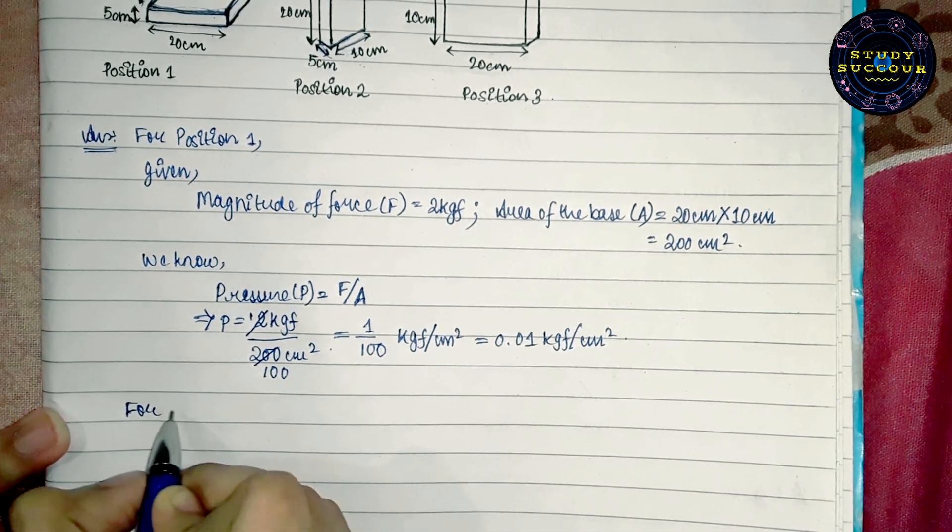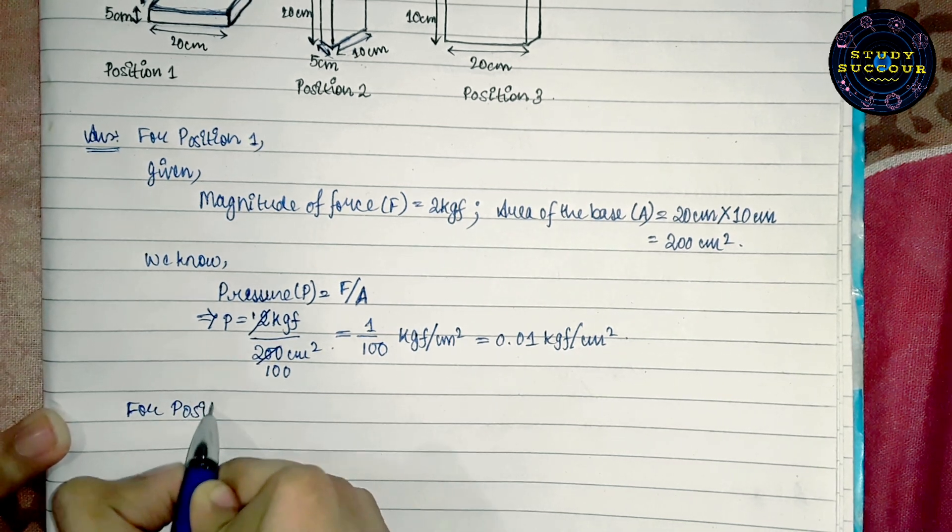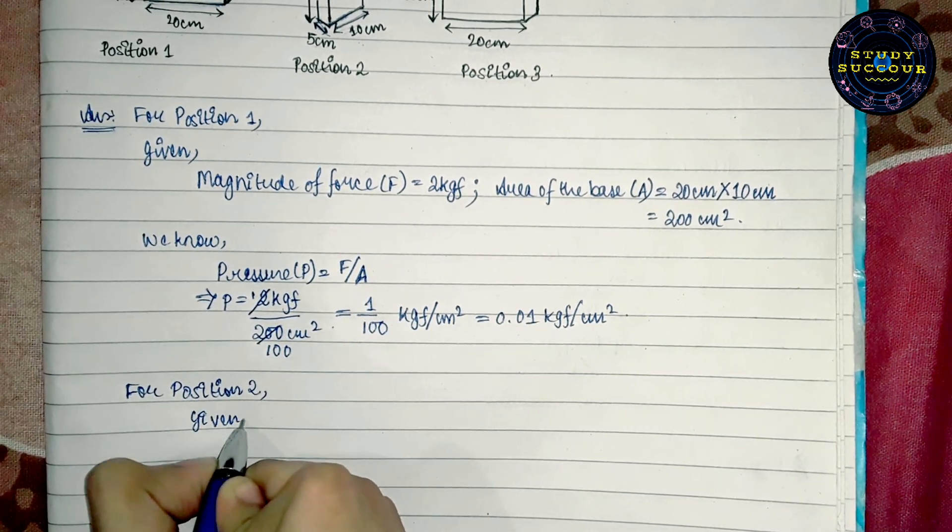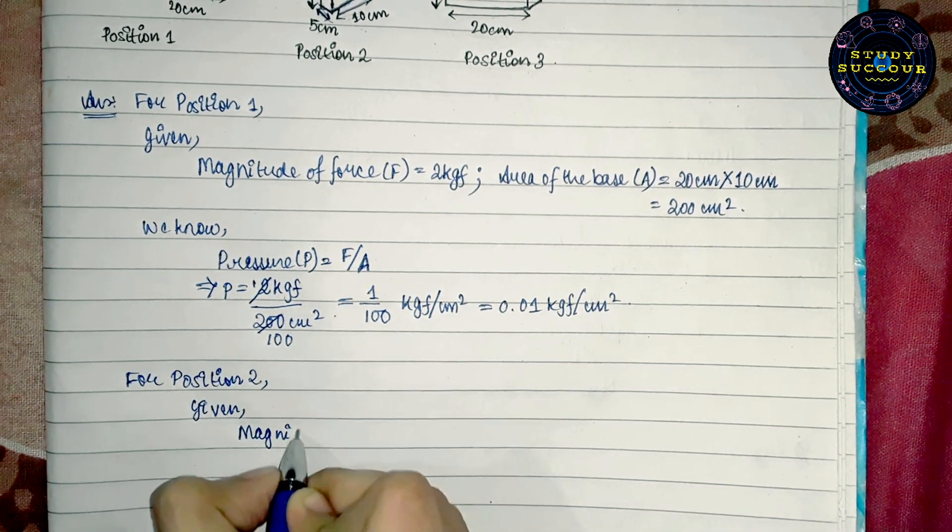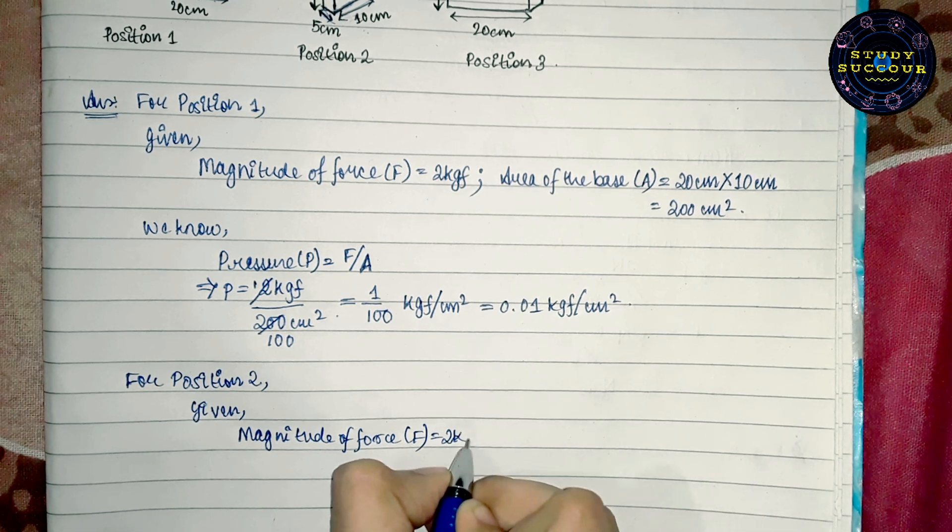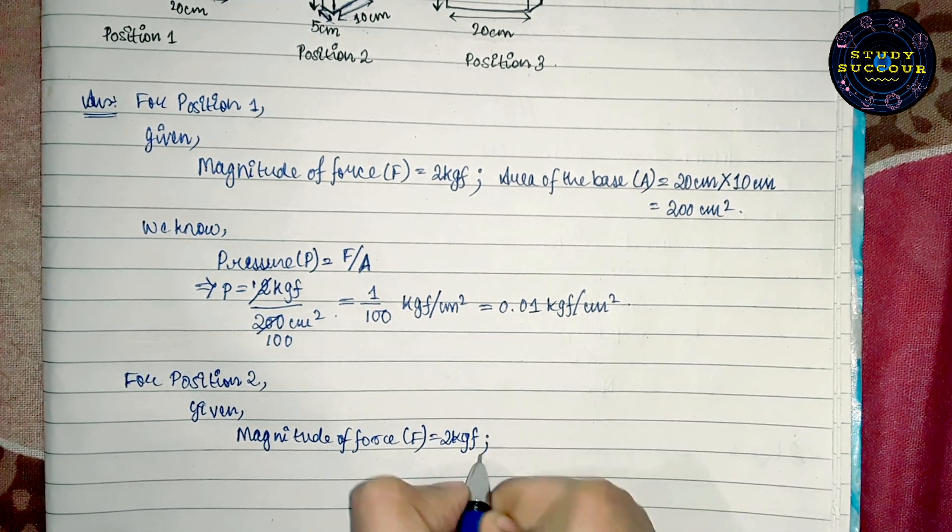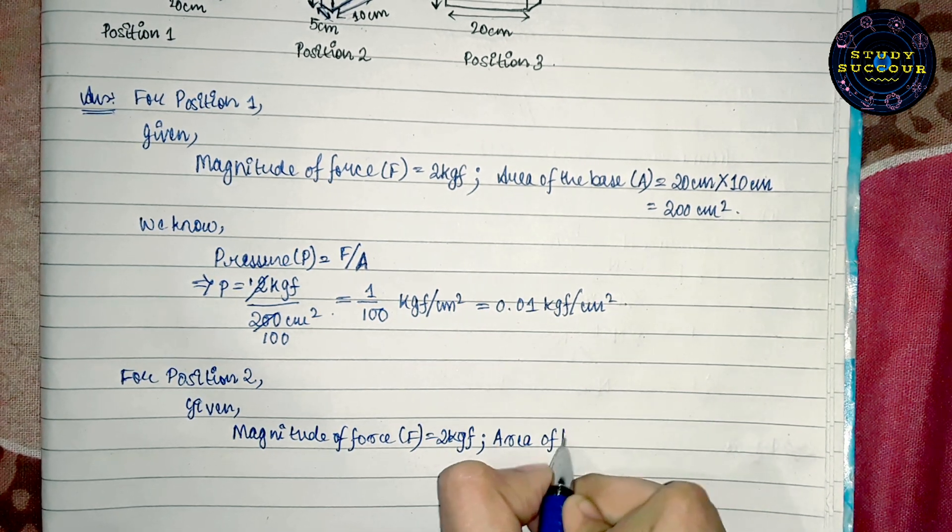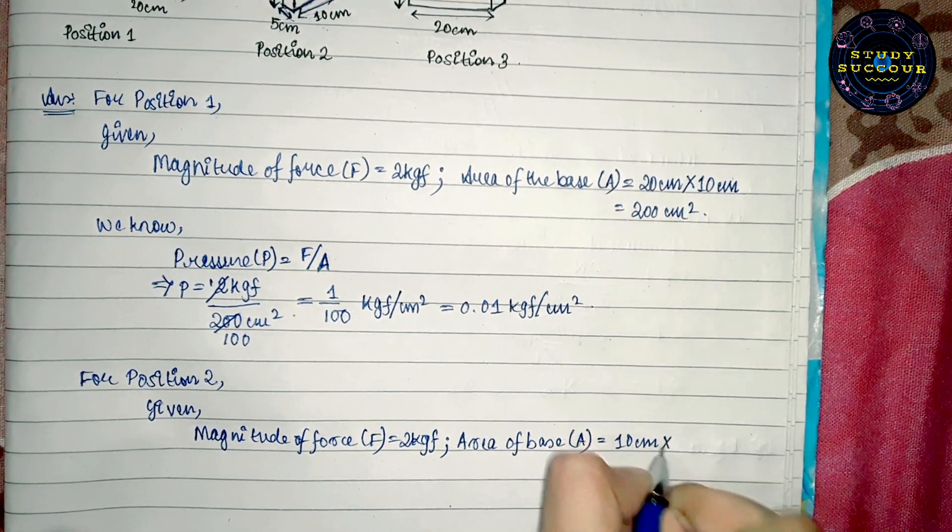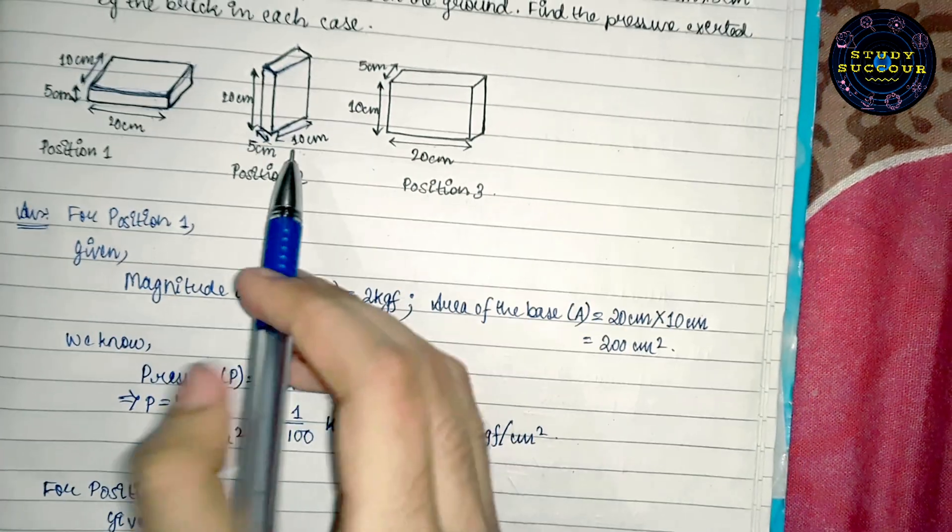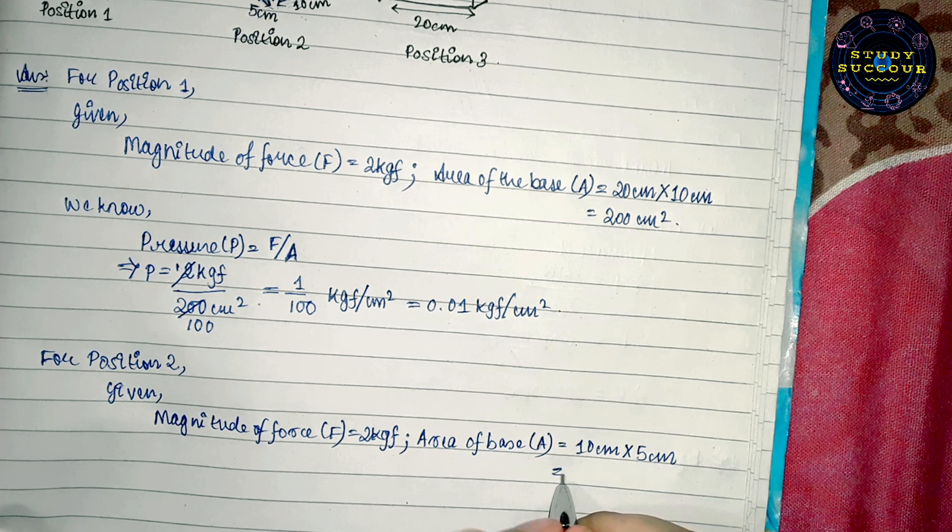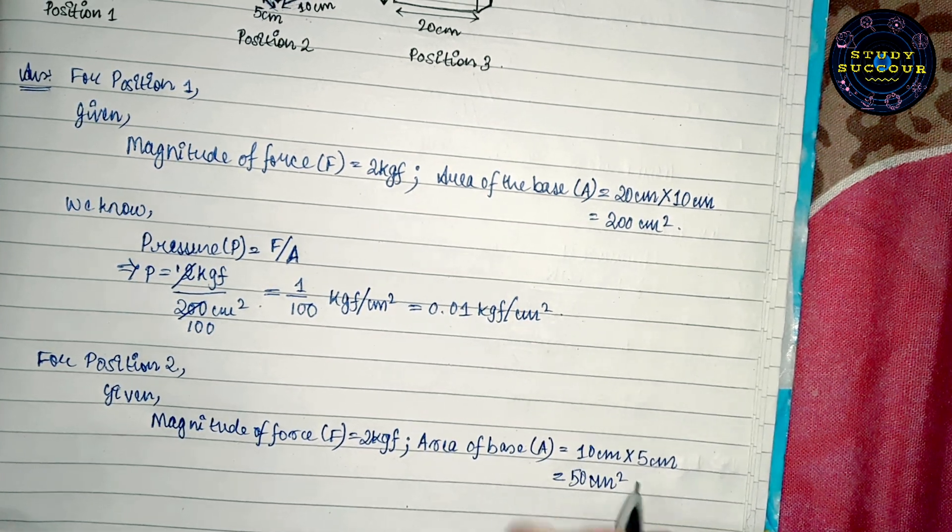In case 2, we have for position 2, we are given magnitude of force F which is again 2 kgf. And the area of the base is 10 cm x 5 cm, because this is the length and this is the breadth. Length into breadth is the area of the base. This equals 50 cm².